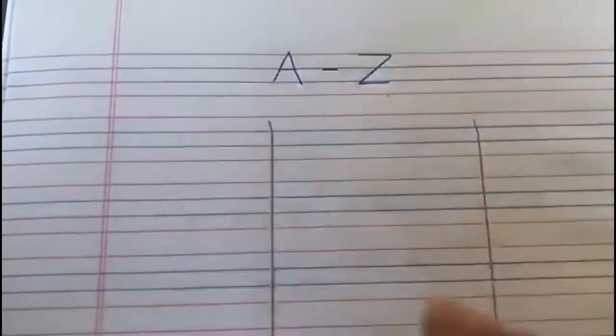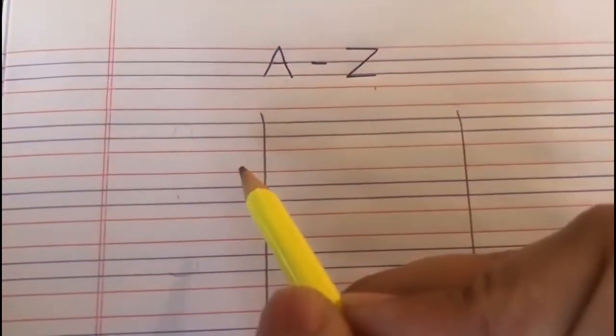Now children, we are going to write capital A to Z in order, but we are not going to write capital J as we have not done it still. So come on, let's begin. And when we write, we are going to say the sound of the letter.